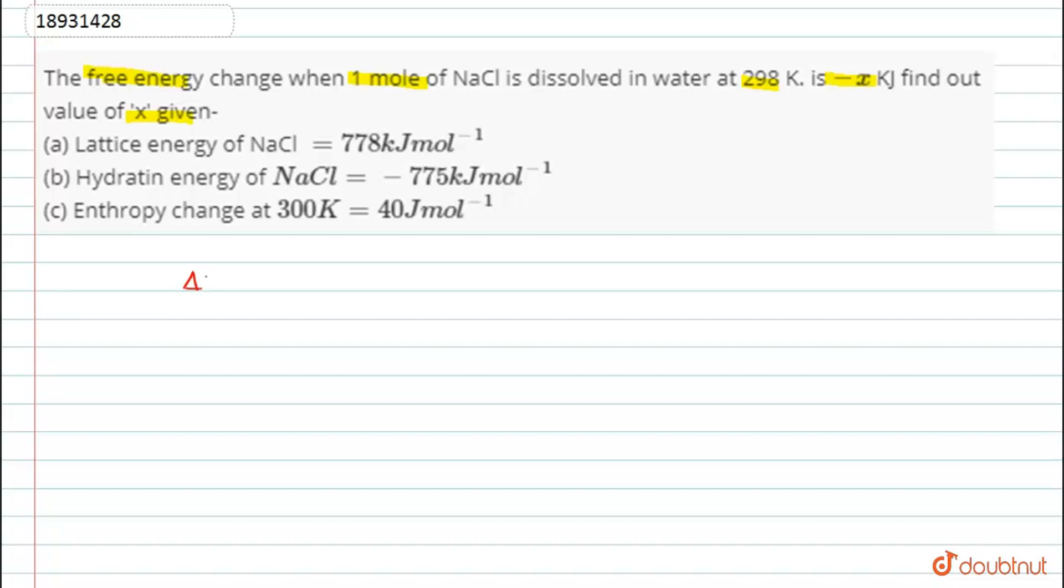So, see here, delta H of dissolution. This is equal to delta H of ionization plus delta H of hydration. So, how much value this will be here? This will be equal to 778 minus 775. So, this will be equal to 3 kJ mol inverse.